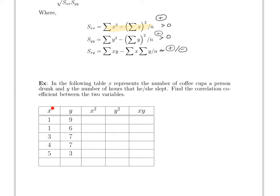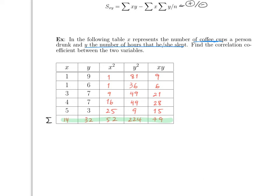For the example, you are given a table with x (number of cups of coffee) and y (number of hours of sleep). You need to complete columns for x-squared, y-squared, and x·y, then find the sum of each column. Pause the video and try it — for example, one squared is one, nine squared is 81, and x·y for that row is nine.